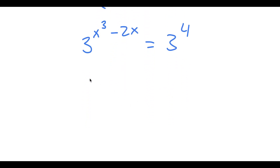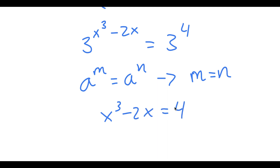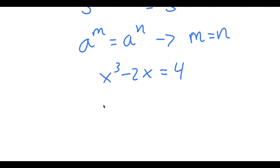And now, if I have something in the form a to the power of m is equal to a to the power of n, then this means that m is equal to n. So in this case, x³ minus 2x is equal to 4, meaning x³ minus 2x minus 4 is equal to 0.